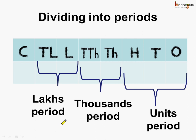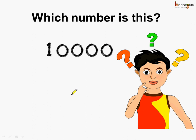When writing a number, if we separate the different periods using a comma, it becomes very easy to read. Let's try it out. Which number is this? 1 followed by 4 zeros. Following the periods, the units period consists of 3 digits starting from the rightmost — 1, 2, 3 — so we put a comma here. After the units period comes the thousands period, so this is equal to 10,000.